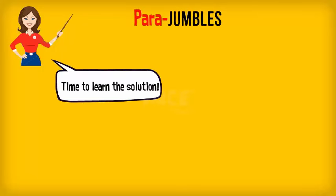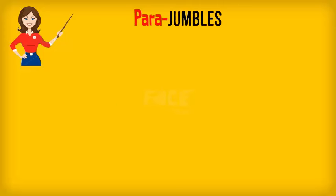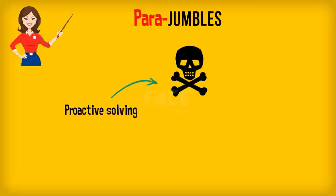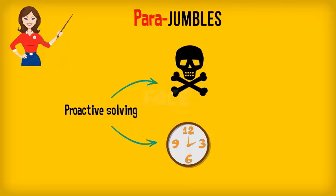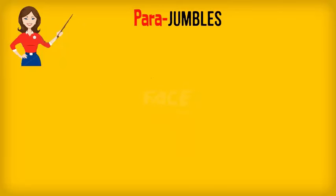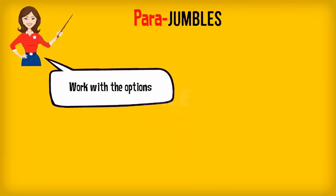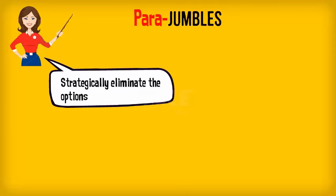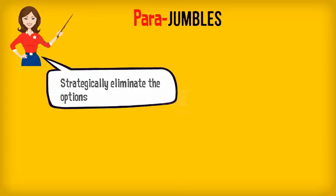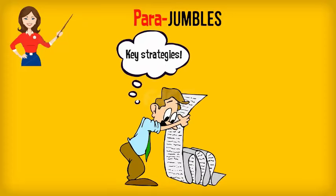We will now look into how to solve para-jumbles. Unlike that for sentence completion, proactive solving can be disadvantageous and time-consuming while solving para-jumbles. So the golden rule is to always work with the answer options. Also eliminate answer options based on key strategies. We will look at the key strategies one by one.